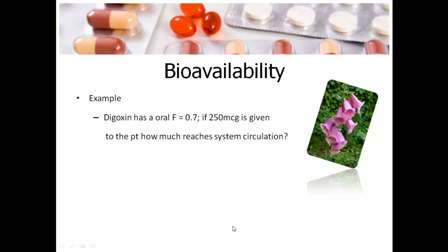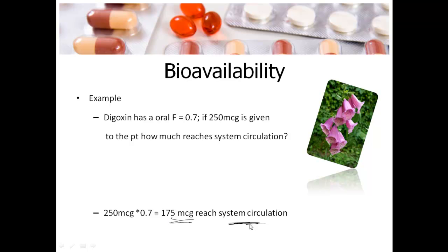All you have to do is take 250 times 0.7, which gives us 175 micrograms reaching systemic circulation. Just take dose times bioavailability to get that answer. And in case you're wondering, this picture is of foxglove, which is actually where digoxin comes from in the real world — not just because I like pretty purple flowers.